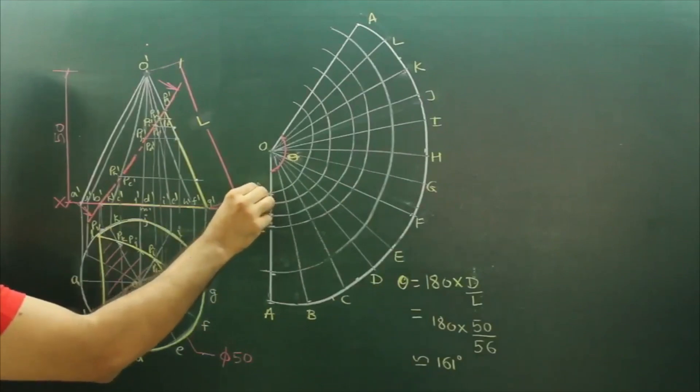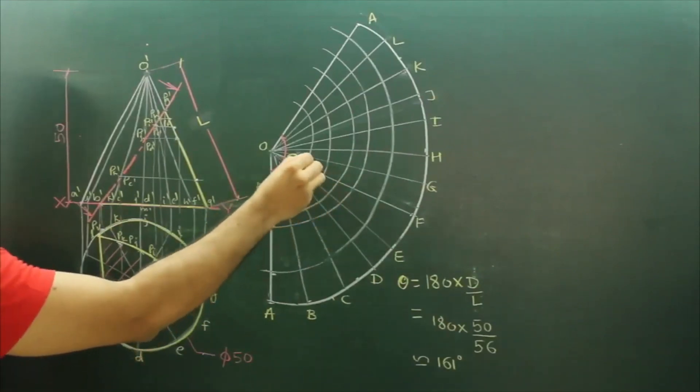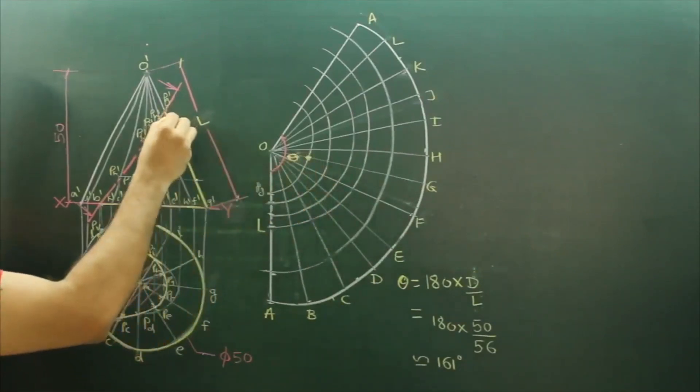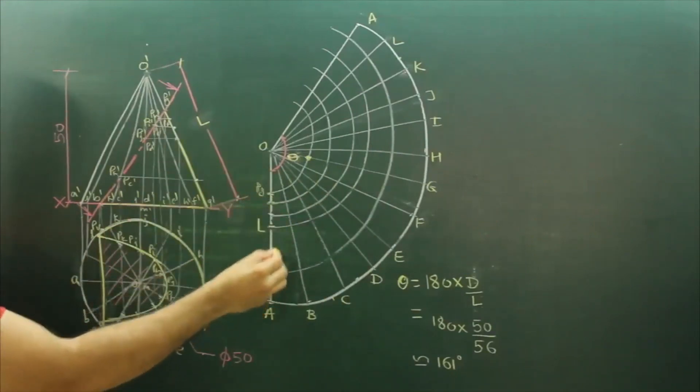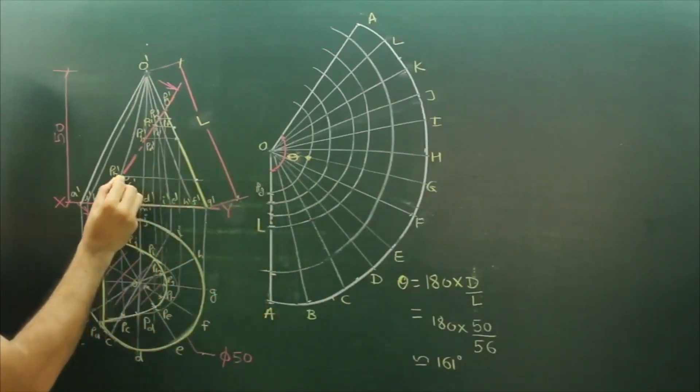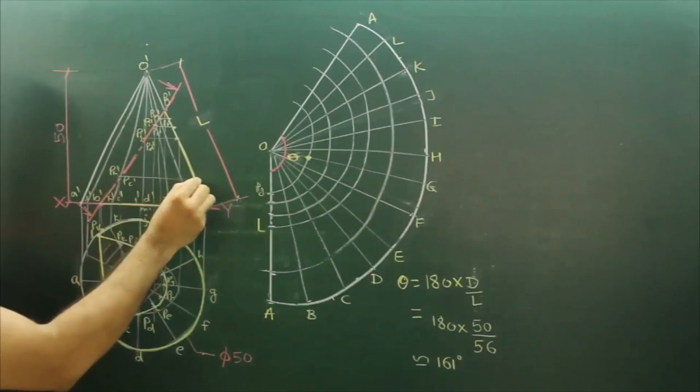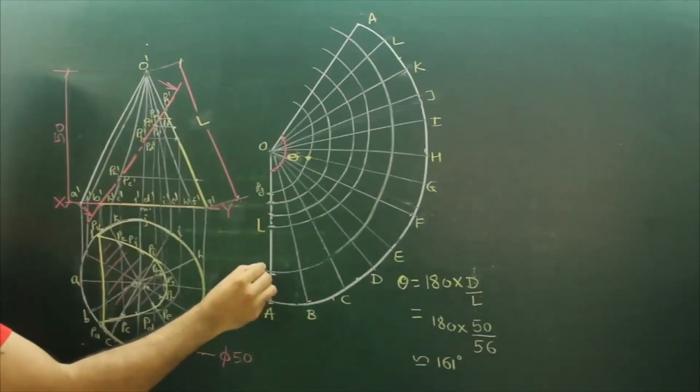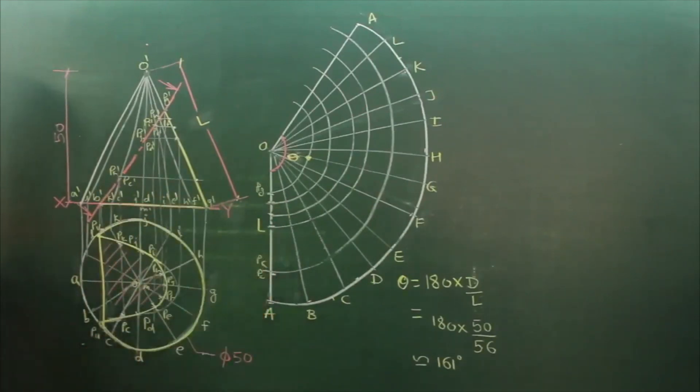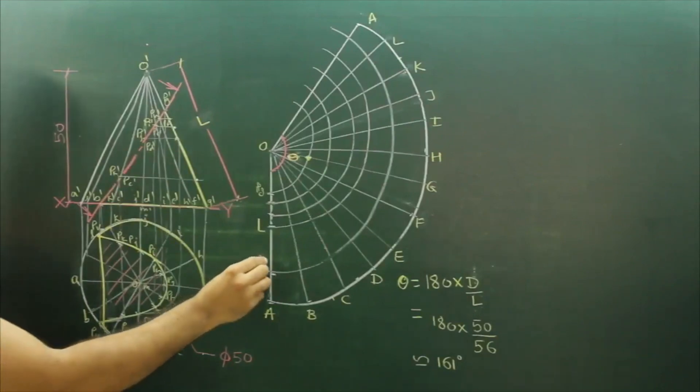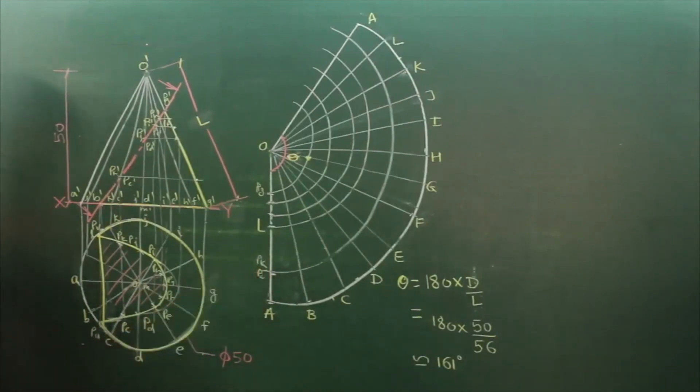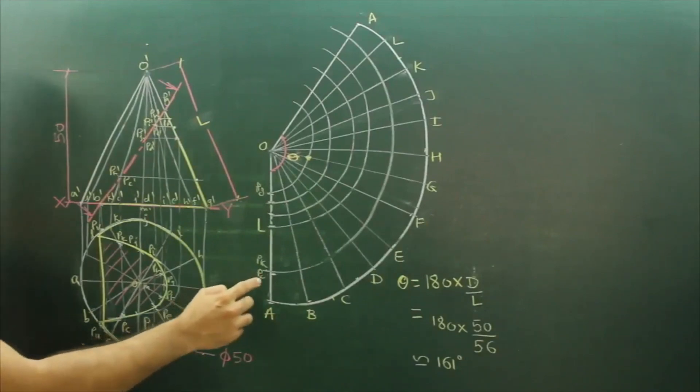Now see, this is point PG, so it will be on G. The next one is PF, PH. This is PB - sorry, PC and PK. So we need to see.